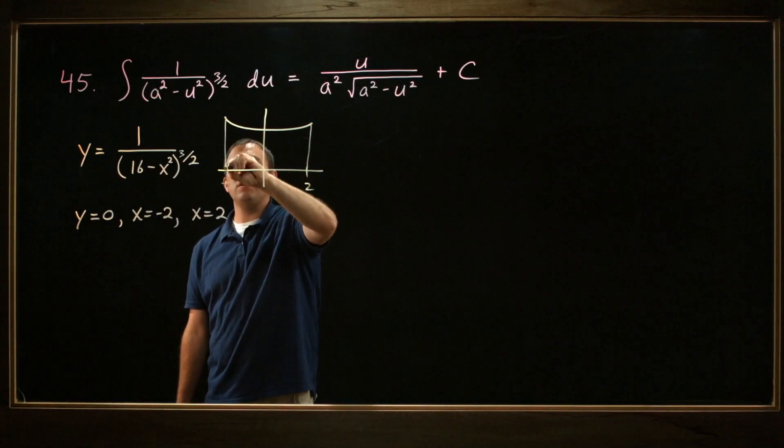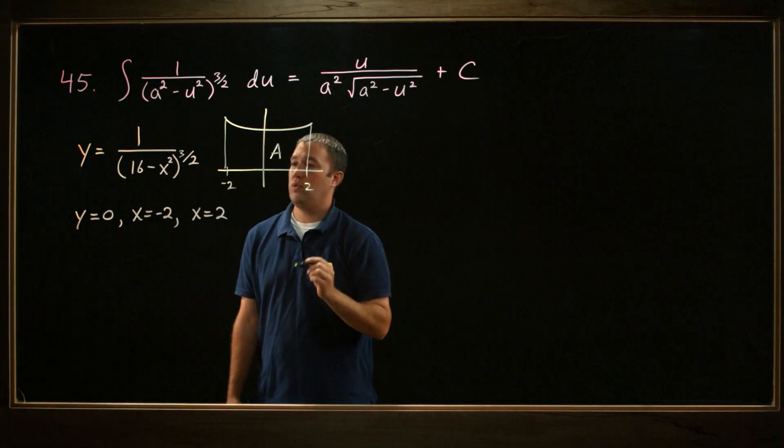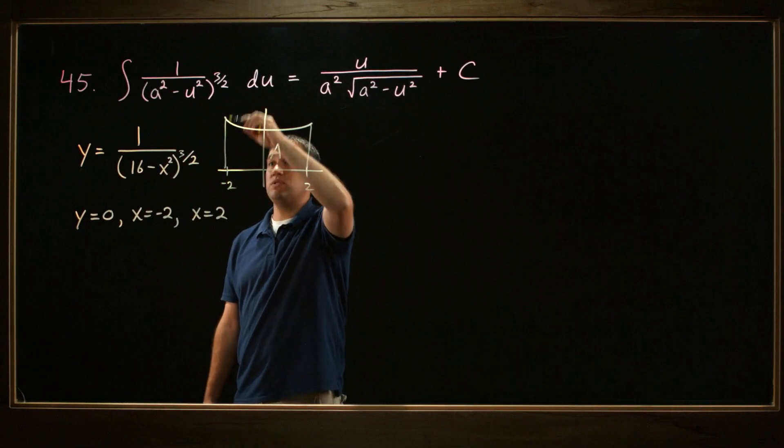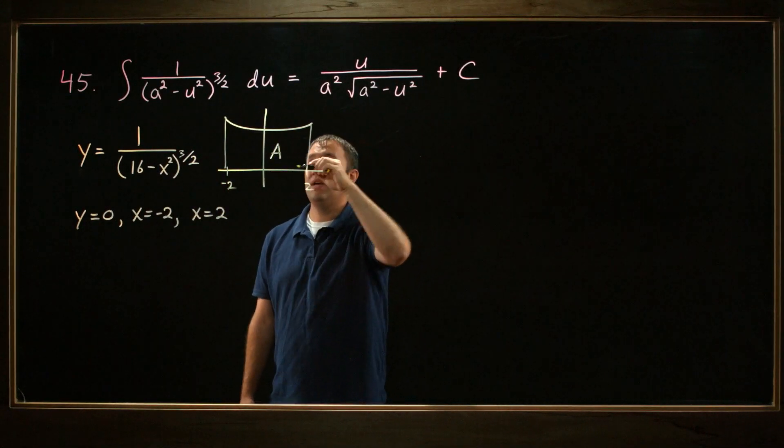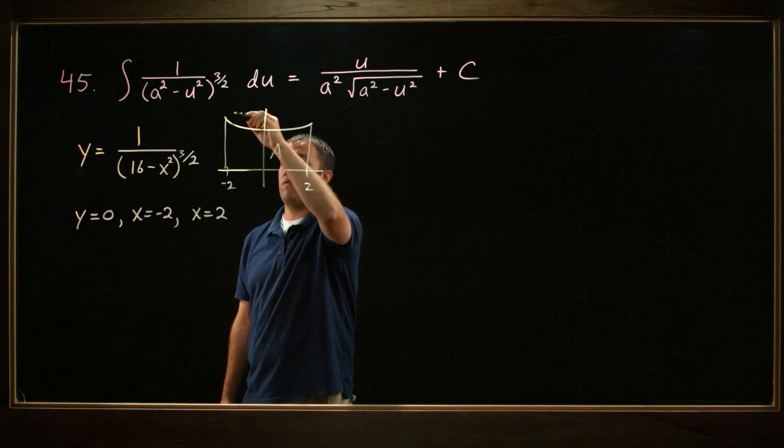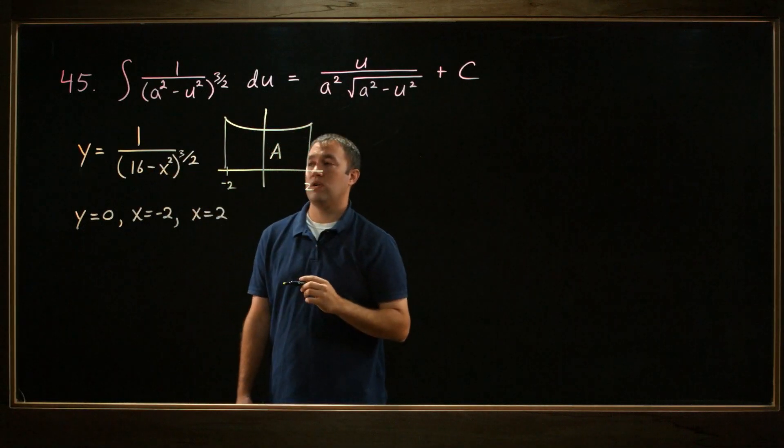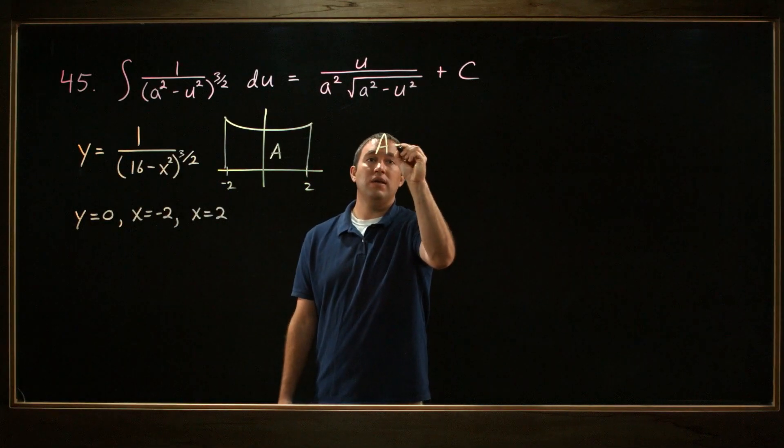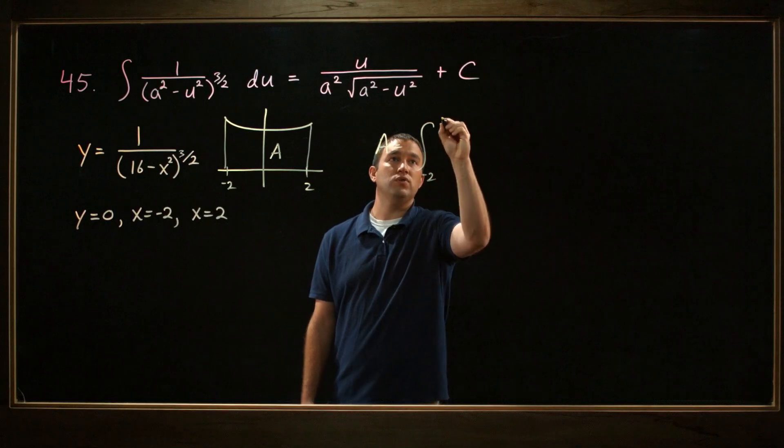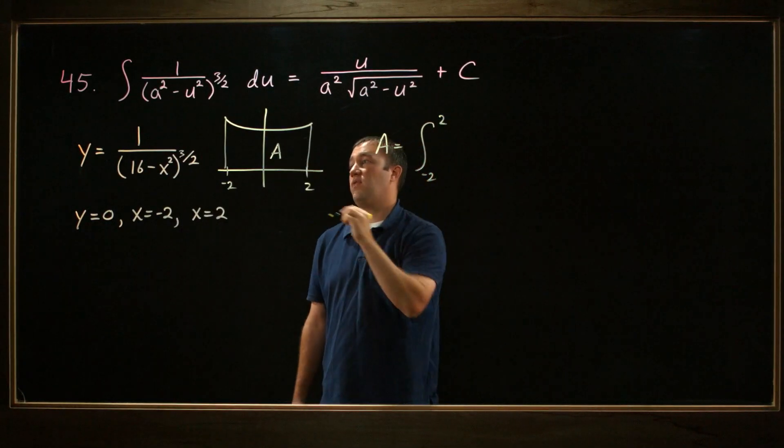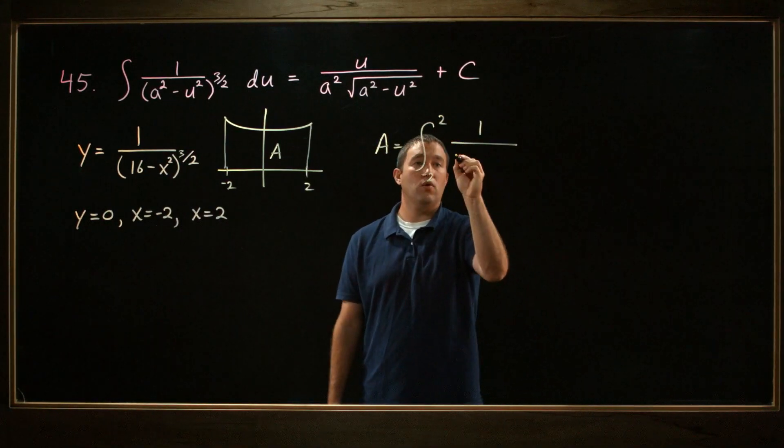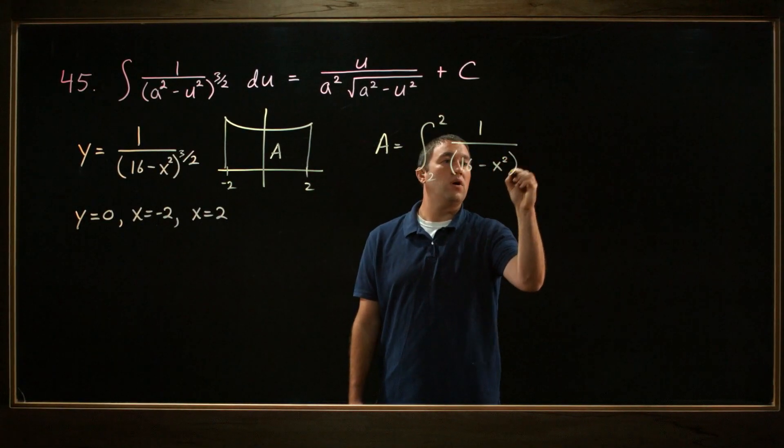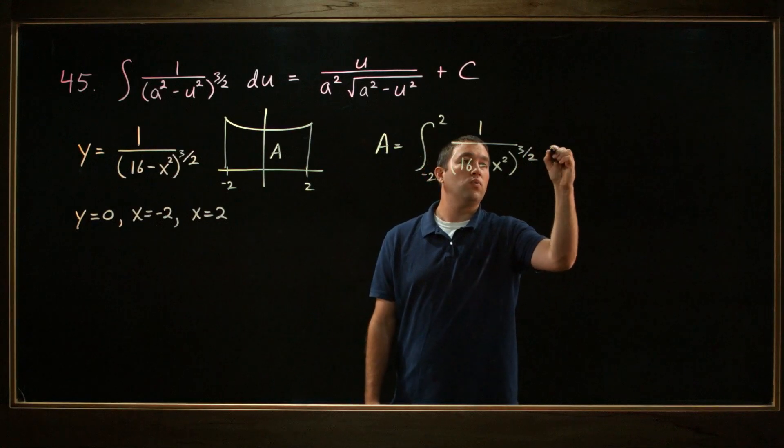So in this problem, we're asked to find this area between the line y equals 0, or the x-axis, the line x equals negative 2 and x equals 2, and then this curve, y equals 1 over 16 minus x squared to the 3 halves. So really, the area equals the integral from negative 2 to 2 of this function, 1 over the quantity 16 minus x squared, all to the 3 halves with respect to x.